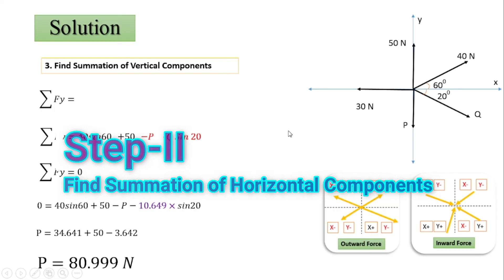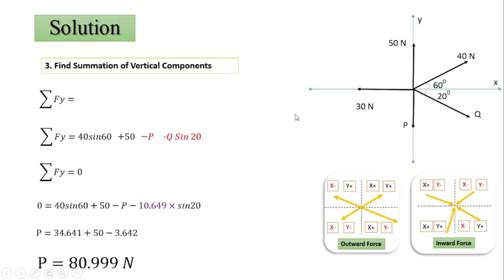By following steps one, two, and three, we can calculate the value of unknown forces when the resultant is zero. Always remember: when the resultant equals zero, ΣFx = 0 and ΣFy = 0. I hope you understood how to find unknown forces in this case. If you liked this video, please share it and subscribe to our channel. Thank you very much.